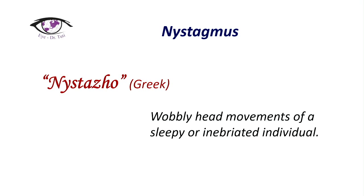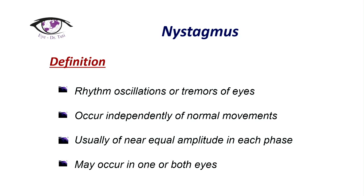Let's start with a little bit about nystagmus. Nystagmus comes from the Greek word 'nystado' which means sleepy. It is a rhythmic oscillation or tremor of the eyes, occurring independently of normal movements, usually of near equal amplitude in each phase, and may occur in one or both eyes — though usually in both.